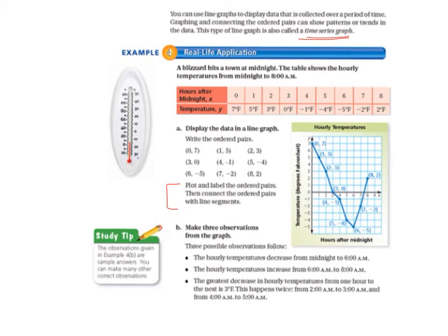So you can see how they've plotted and labeled every single ordered pair. So it goes 0, 7; 1, 5; 2, 3; 3, 0; 4, negative 1; 5, negative 4; 6, negative 5; 7, negative 2; and 8, 2.